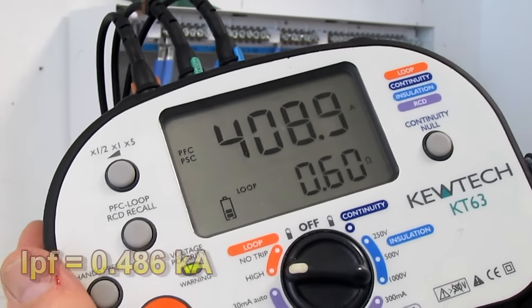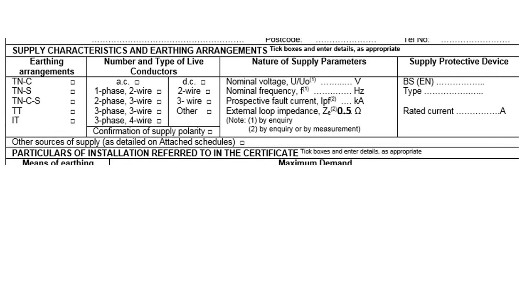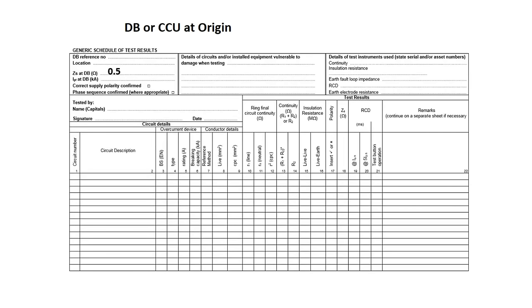Our IPF — our prospective fault current — is quite simply the highest of these two values. The value of IPF can now be written on our electrical installation certificate under the supply characteristics and earthing arrangements, in the box showing IPF in kiloamps. So I'm going to round up our IPF of 0.486 to 0.49 and put it in the box. This value can also be written on the top left-hand side of our schedule of test results just underneath where we'd written our ZS at dB reading of 0.5, so let's put in 0.49 and also tick the supply polarity box.